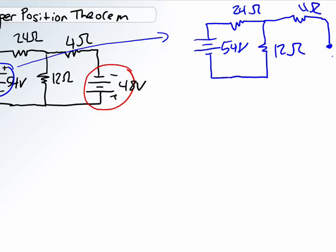which is hooked up to our 4-ohm resistor. But now we get to our 48-volt source. What are we going to replace it with? Well, since it's a voltage source, we replace it with a short. We just go ahead and analyze this network according to the 54-volt source.